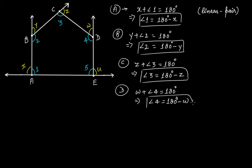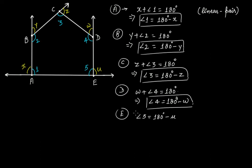In the same way, from vertex E, you get angle 5 is equal to 180 degrees minus U.